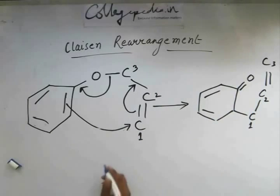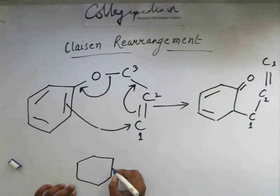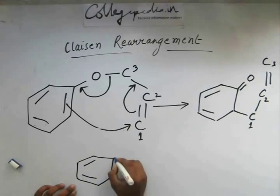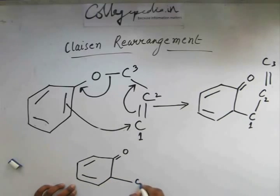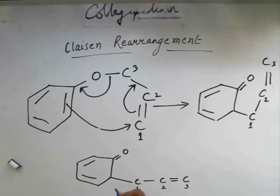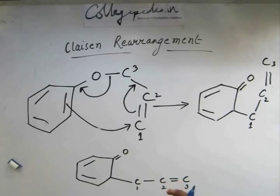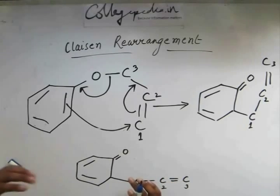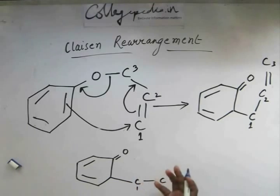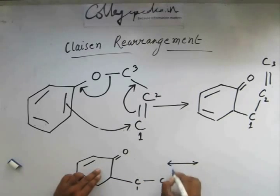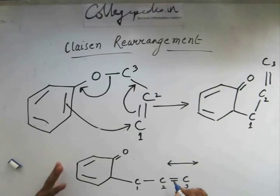I will redraw this structure. We have this with C1, C2, C3. This is the keto form of the compound. We know that the keto and enol forms always remain in a dynamic equilibrium. It depends on whether the keto form or the enol form is most stable. In this case, the enol form is more stable because that is the benzenoid structure.